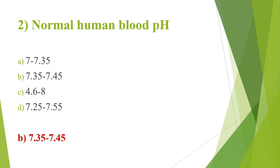Normally the human blood pH is slightly basic. Blood pH detection is an important indicator of good health. The pH of blood is an indication of acidity or alkalinity in the body. Acid-base balance can be evaluated by measuring the pH and the levels of carbon dioxide and bicarbonate in the blood.